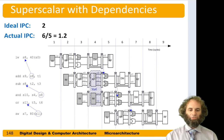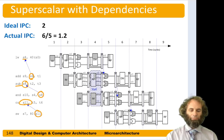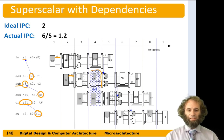Now let's consider a superscalar processor with some dependencies. We load into s8, but the add uses s8. The subtract's destination is also s8, and the AND depends on that s8 from the subtract. The OR's destination is s11, and a store depends on s11. On the first cycle we could issue the load, but we can't issue the add because it needs s8 that we don't yet have from the load. On the second cycle we could issue the add, but it stalls and must wait until s8 is available in cycle five.